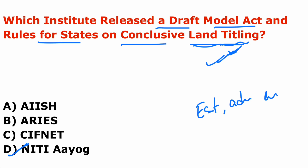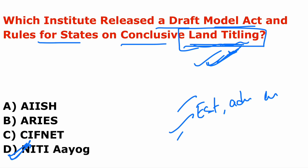A land title is a document that determines the ownership of land or immovable property. The model act enables state governments to establish, administer, and manage the title registration of immovable properties. After three years of notification, the registered title ends without any external action automatically. Key people to remember: NITI Aayog Chairman is PM Modi, Vice Chairman is Dr. Rajiv Kumar, and CEO is Amitabh Kant. Headquarter is New Delhi.